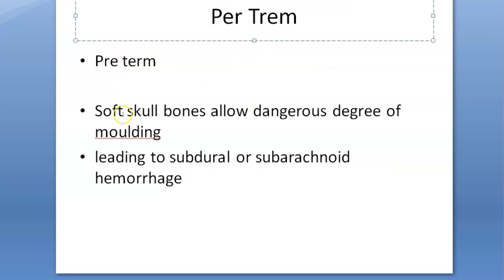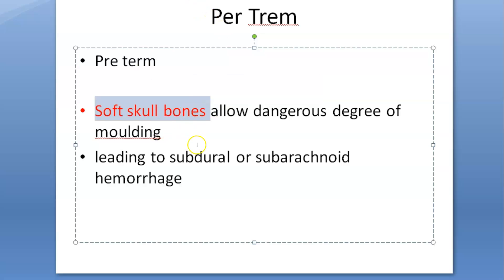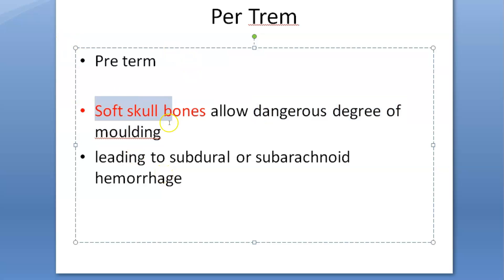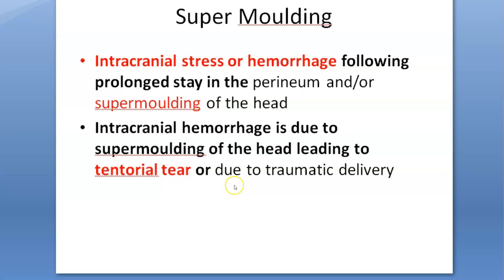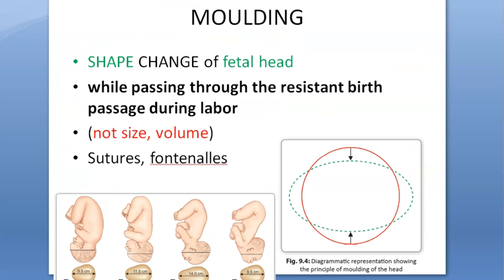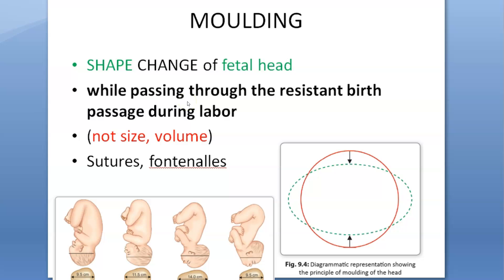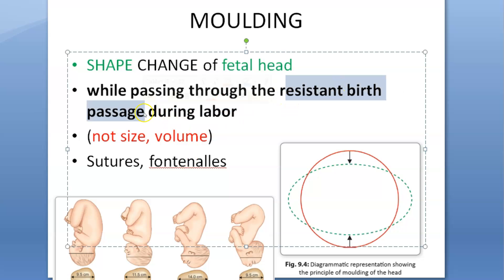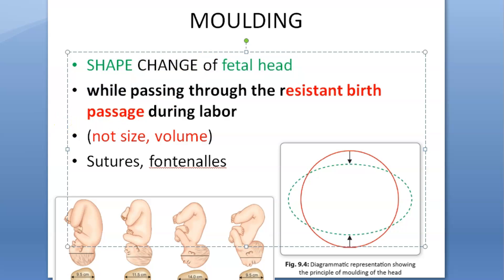In a preterm infant, because those bones are very soft, it will allow a dangerous degree of molding - an excess dangerous degree of molding - because the bones are so soft. This leads to subdural and subarachnoid hemorrhage in preterm infants. To summarize: molding is a change in shape, not the size or volume, of the fetal head while passing through the resistant birth passage during labor. The key word is 'resistant' birth passage.